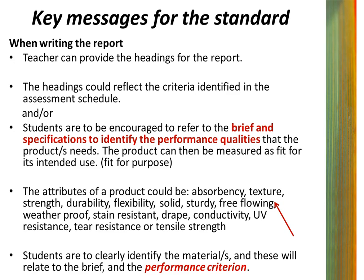A suggested starting point is the use of the brief and specifications. Students are to identify the product or products that they have made over the year and identify the performance qualities that the product or products needed to be judged as fit for its purpose. This could also be the attributes of the product such as absorbency, texture, strength, durability, flexibility, sturdy, weatherproof, stain resistant, drape, etc.